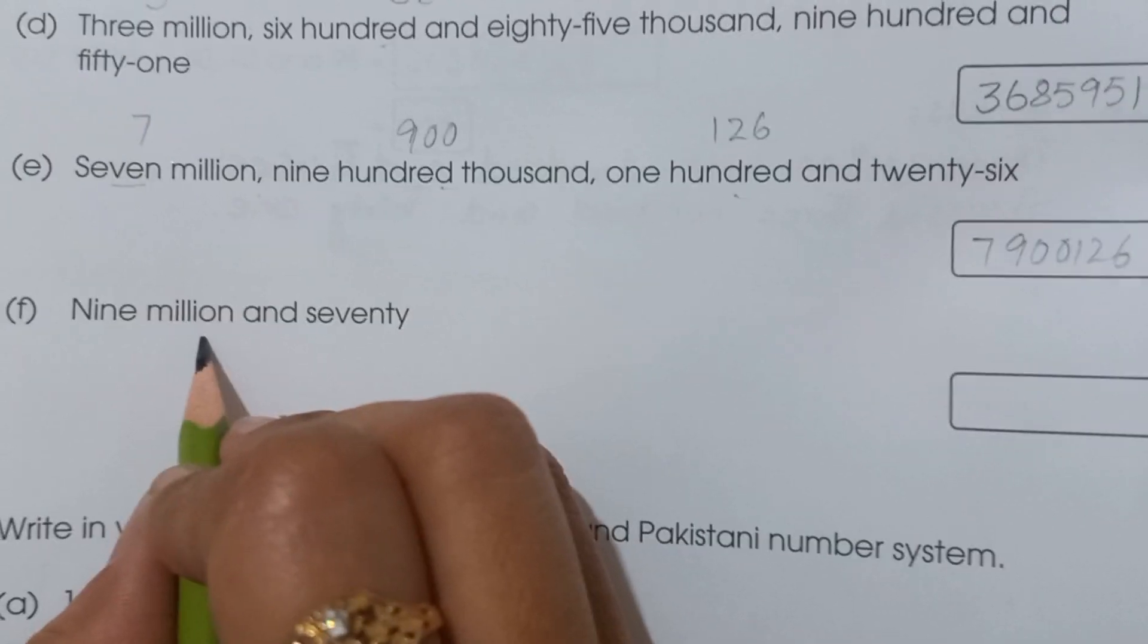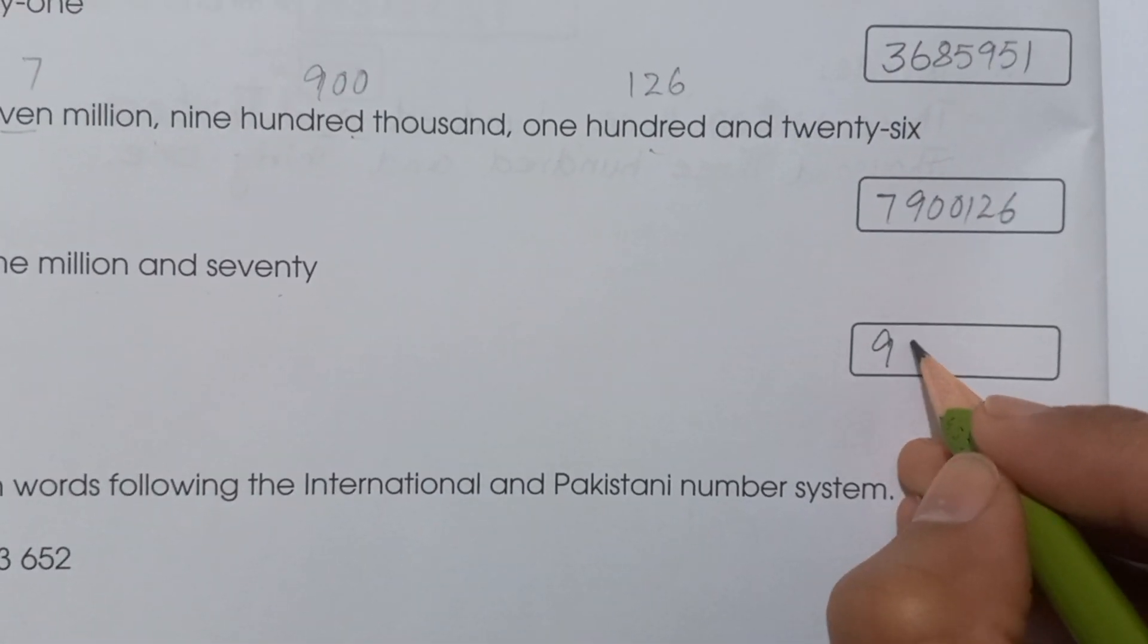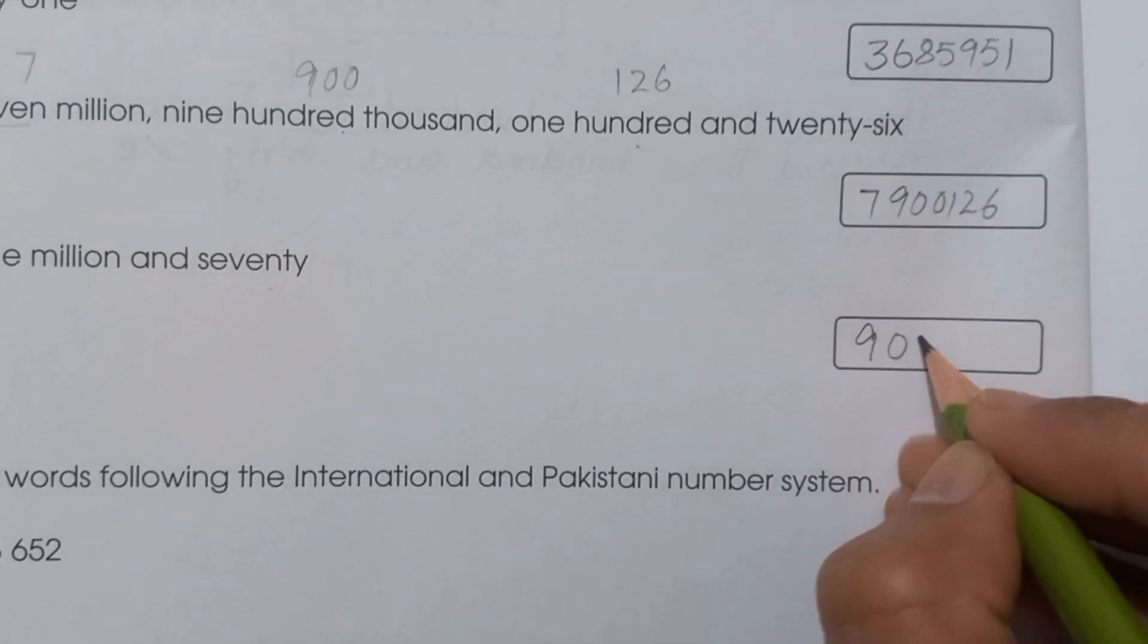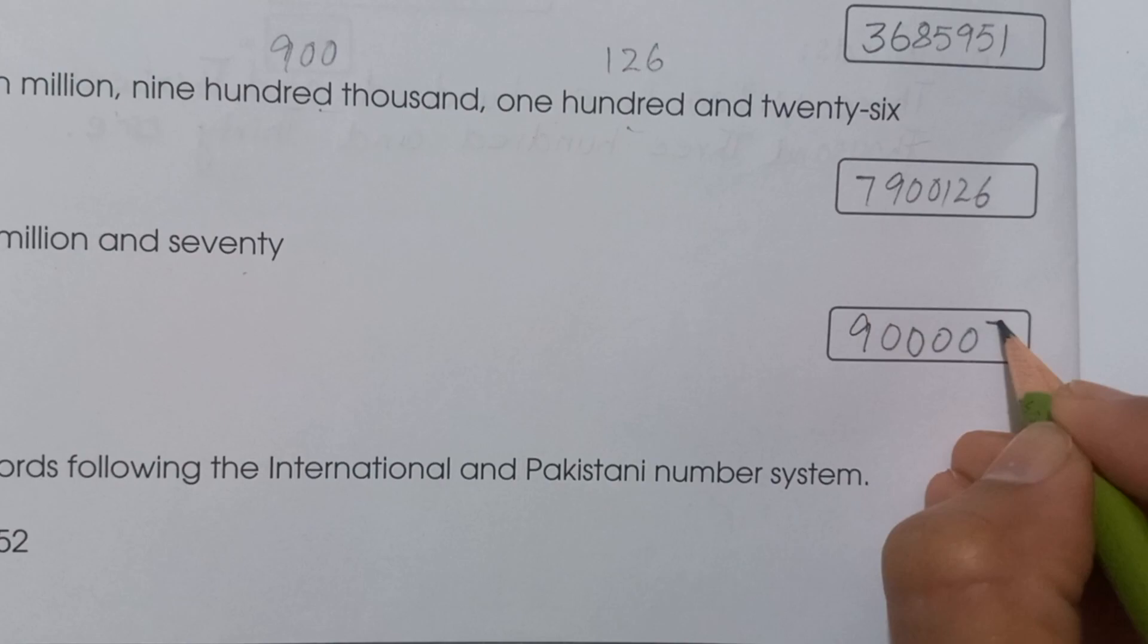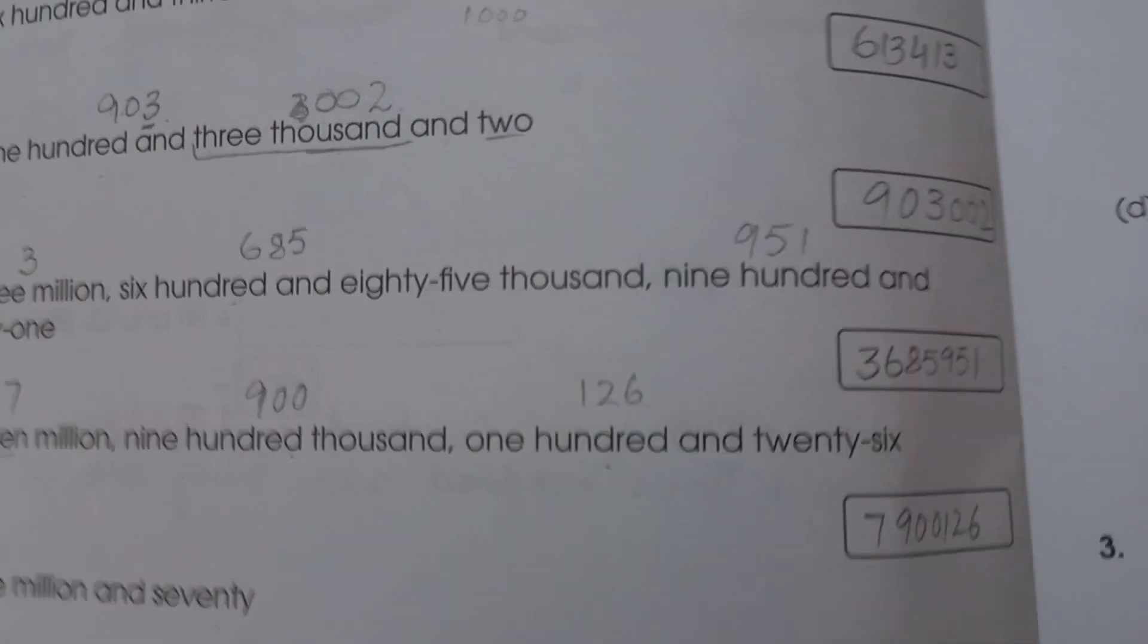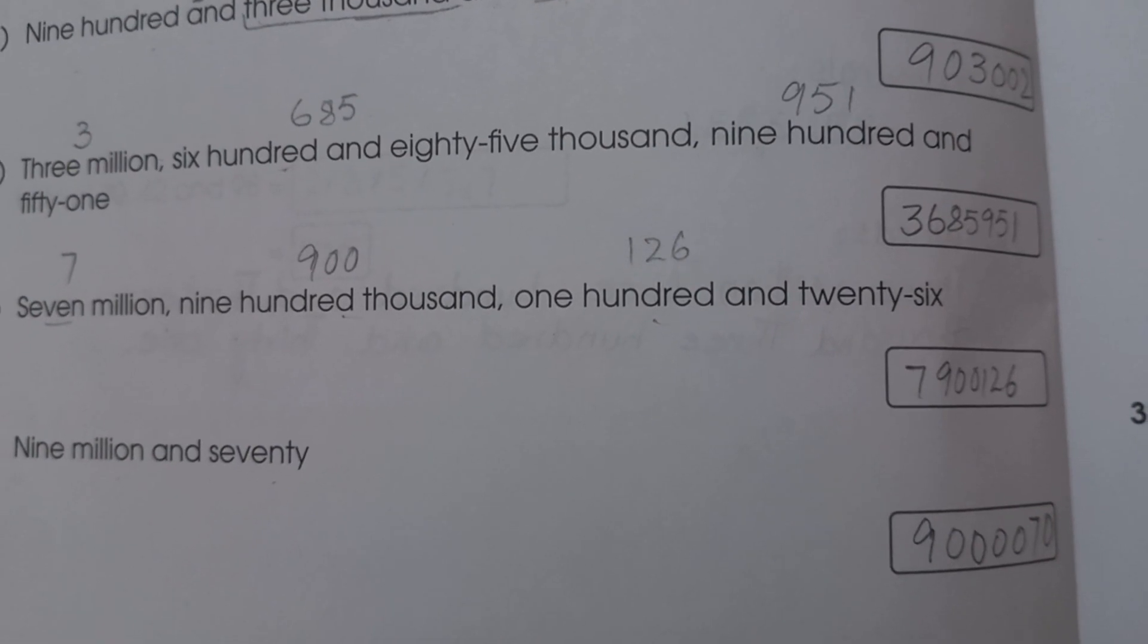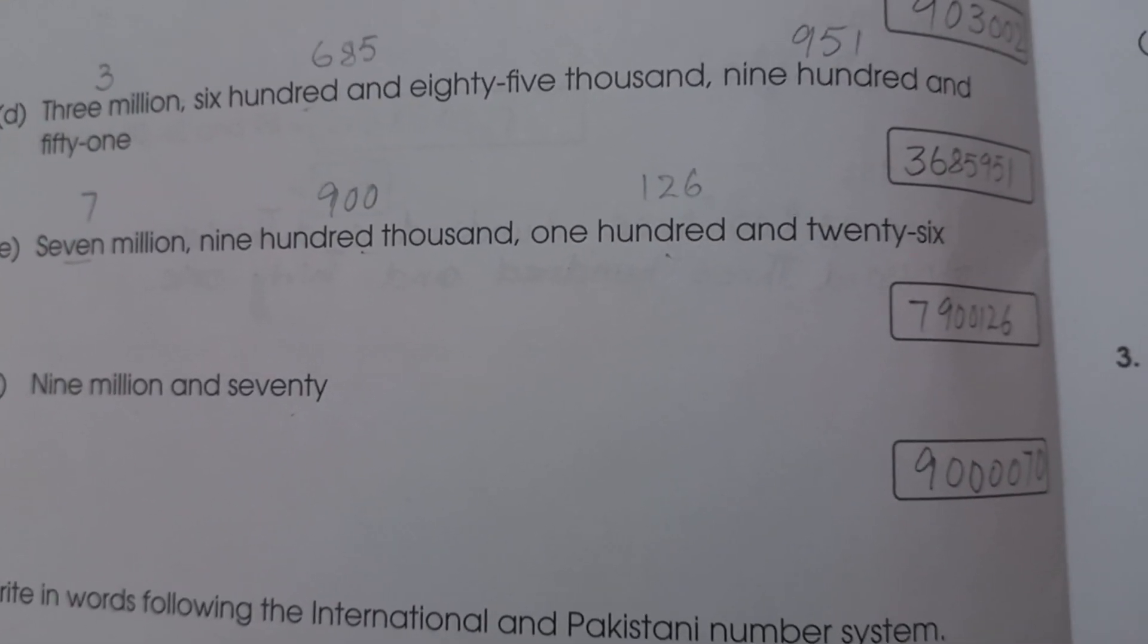Part (f): nine million and seventy. This is very easy. Nine million - how many zeros? One, two, three, four, and seventy. So: 9,000,070. That's question number 1 solved. Practice this. In the next video, we will solve question number 2. Until then, Allah Hafiz.